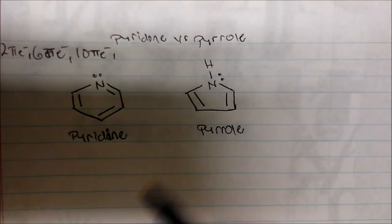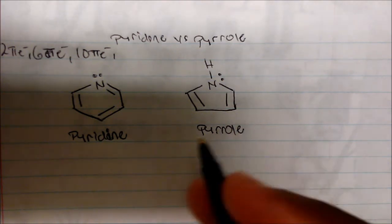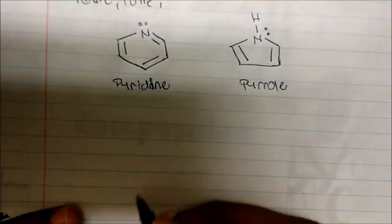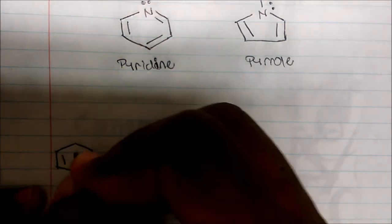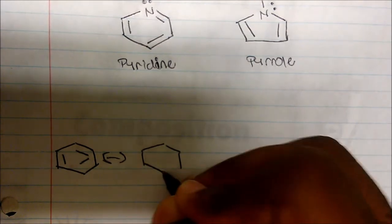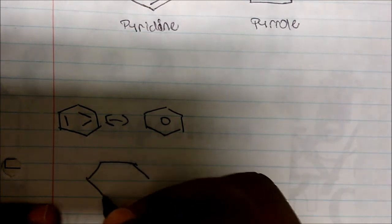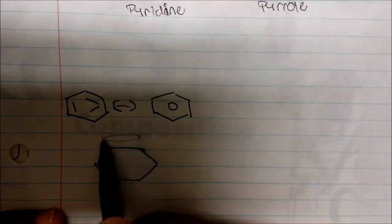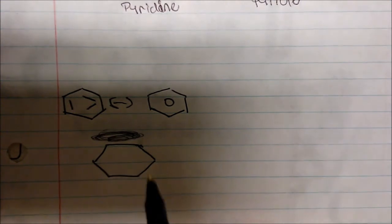It comes down to the idea that nature likes stability, and benzene is one of the more stable molecules. Benzene is usually drawn with alternating double bonds, but in reality it has a cloud of electrons circulating on the top and bottom of the ring. This is how the molecule actually looks — a delocalized aromatic system.